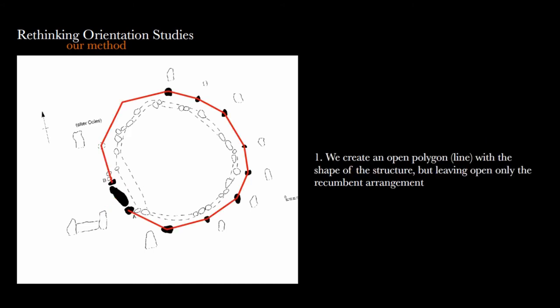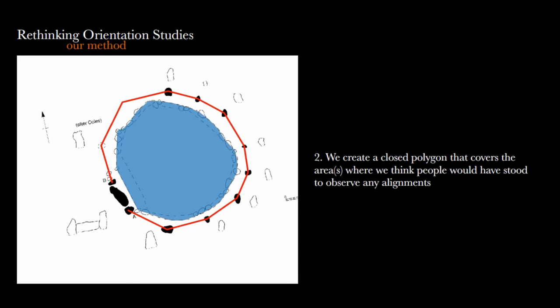So what do we do? We take the survey data and first create an open polygon—in this case a line—with the shape of the structure, where we're blocking out the areas we're not interested in. We're interested in visibility through the recumbent, so we're leaving the recumbent arrangement open and blocking everything else. Bear with me, this will make sense in a second. Then we create a closed polygon that corresponds to our uncertainty in where people would have been standing to observe any potential alignment. I could have used the entire circle, but I'm using this area limited by a cairn that is very clear in the archaeological record—much clearer than where the stones are standing. But I could have used any area I wanted; this is just an example.